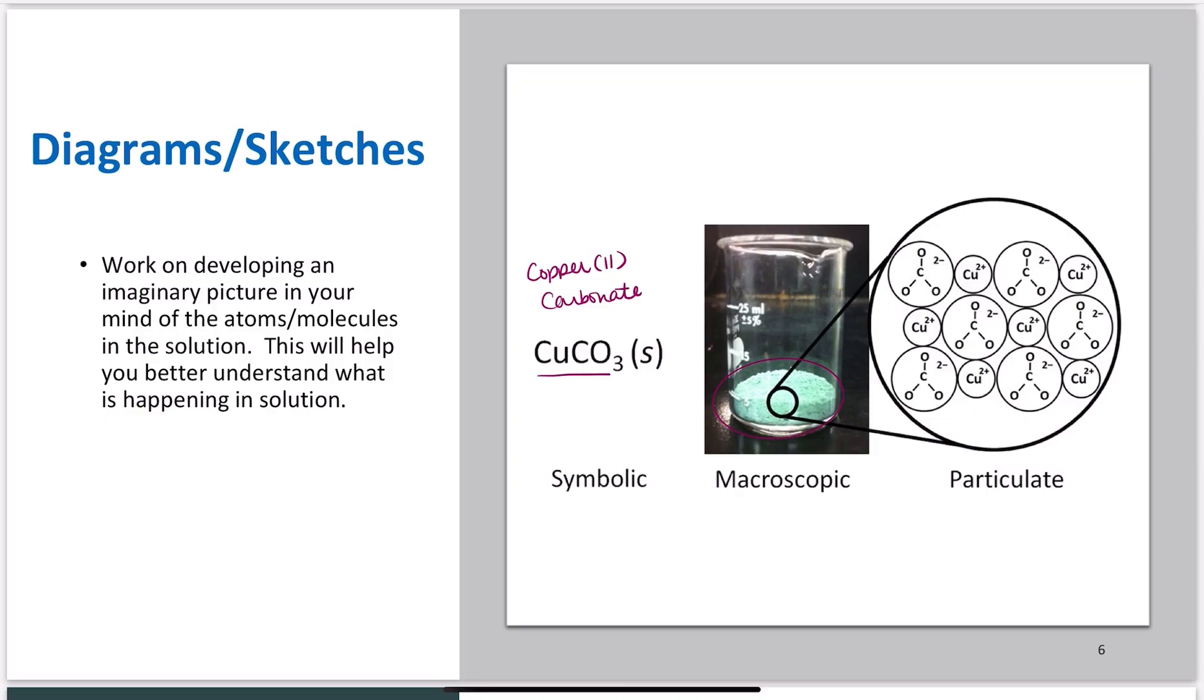Symbolically, we write the formula macroscopically - this is what it looks like to us. But the particulate diagram, what I should be envisioning in my mind, is a series of copper(II) ions and carbonate ions. They have opposite charge of each other. There's a one-to-one ratio of copper(II) ions to carbonate ions. I see my copper(II) surrounded by my carbonates, and my carbonates surrounded by my coppers. Start developing that in your mind because I need you to be able to see in solution what's going on.